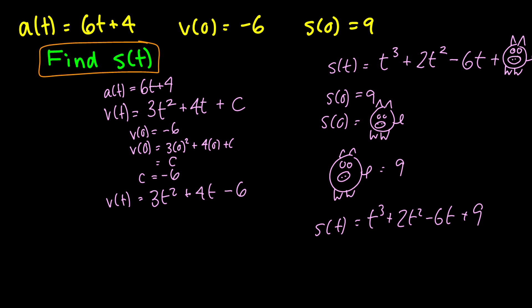Of course, the good thing about antiderivatives is you have a very easy way of checking your answer. So s(t) = t^3 + 2t^2 - 6t + 9. Let's just take the derivatives quickly. This is 3t^2 + 4t - 6 and the acceleration is going to be 6t + 4.